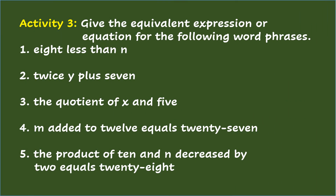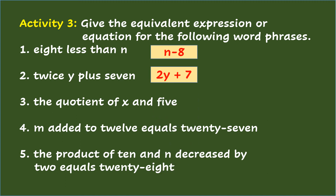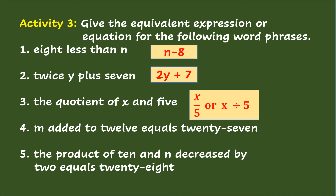Activity 3: Give the equivalent expression or equation for the following word phrases. Number 1: 8 less than n — the answer is n minus 8. Number 2: twice y plus 7 — the answer is 2y plus 7. Number 3: the quotient of x and 5 — the answer is x over 5, or x divided by 5.